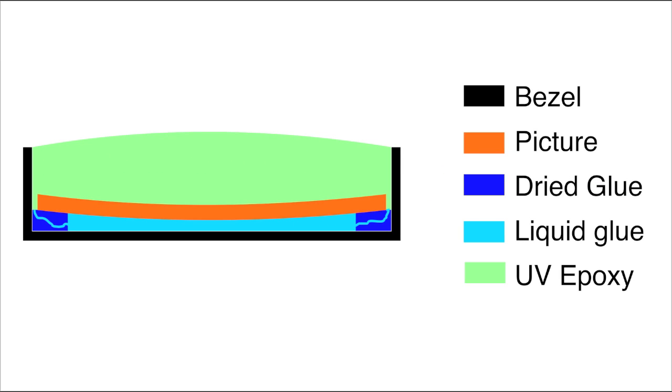Now in this image, you can see the pressure causes slight cracks in the dried glue that leaves channels open from the liquid glue up to the epoxy. These are the channels in which air will be squeezed out and cause bubbles into the epoxy.